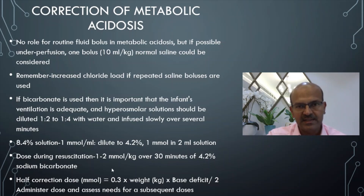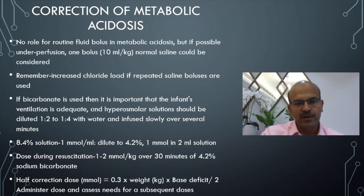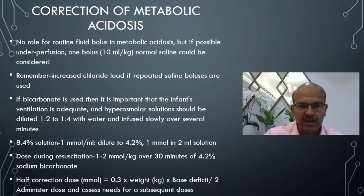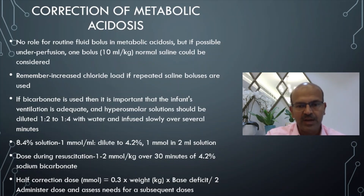During resuscitation you are not going to wait for the blood gas, so you give 1 to 2 ml per kilo of 4.2% solution — that is 0.5 to 1 millimole per kilogram — and give it over 30 minutes. If a blood gas is available and you have the base deficit calculated, you can use 0.3 (volume of distribution) times weight in kilograms multiplied by the base deficit. Divide it by 2 for half correction. Half correction is preferred, but if the severe acidosis is extreme, you can give a full correction.